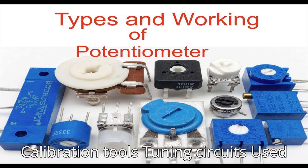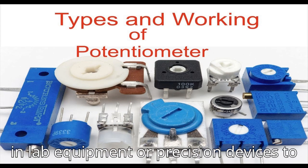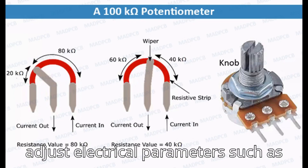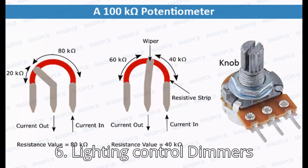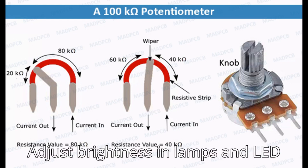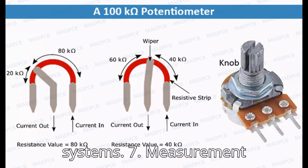Fifth, calibration tools: used in lab equipment or precision devices to adjust electrical parameters such as frequency, offset, or resistance. Sixth, lighting control: dimmers adjust brightness in lamps and LED systems.